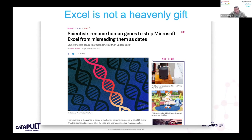Recently — this is just a news article — some of the people who've named genes have finally given up and decided not to have names that look anything like dates, because Excel just mangles them and the data is lost. So genes with cool names like SEPT1 will probably have different names going forward. But even that switch of names gives rise to issues — it isn't just genes that are mangled, compound names are messed up as well.